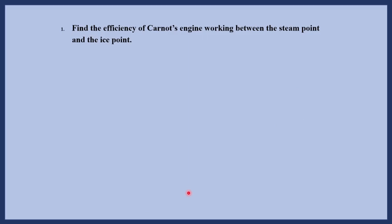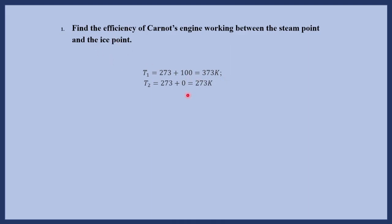We have seen how to calculate the efficiency of a Carnot's engine. In this case, the high temperature is the steam point and the low temperature is the ice point. T1, the temperature of the hot source or heat reservoir, is 100 degrees Celsius, which converts to 373 Kelvin. T2, the low temperature, is the ice point at 0 degrees Celsius, which gives 273 Kelvin.